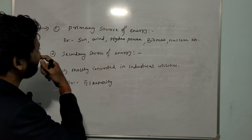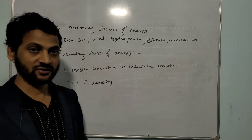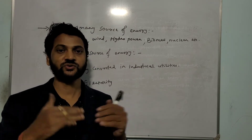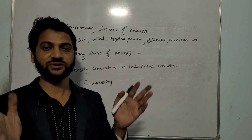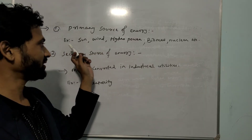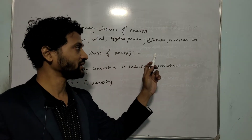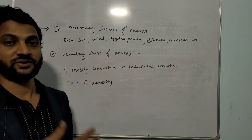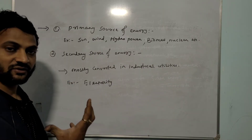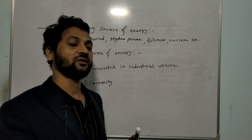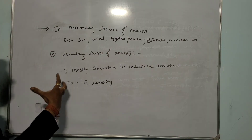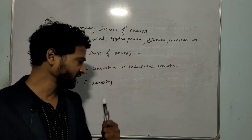The last classification is primary source of energy and secondary source of energy. To understand the concept, we have to compare between two sources of energy — then only you can distinguish which is primary and which is secondary. Primary source of energy can be solar energy, wind energy, hydro energy, biomass, and nuclear energy. Secondary source of energy is when the primary source gets converted for industrial utility or some other purpose — like electricity.